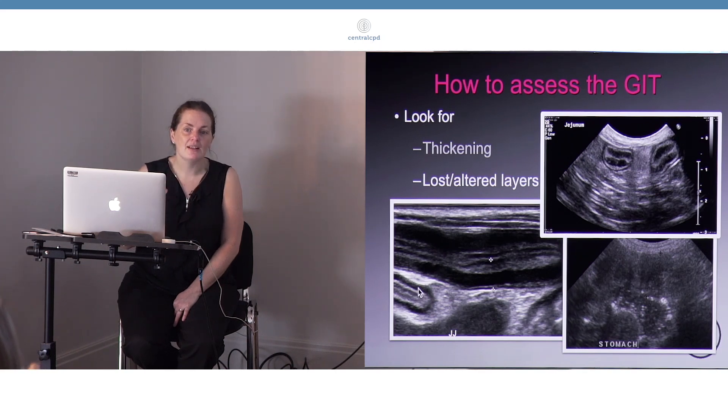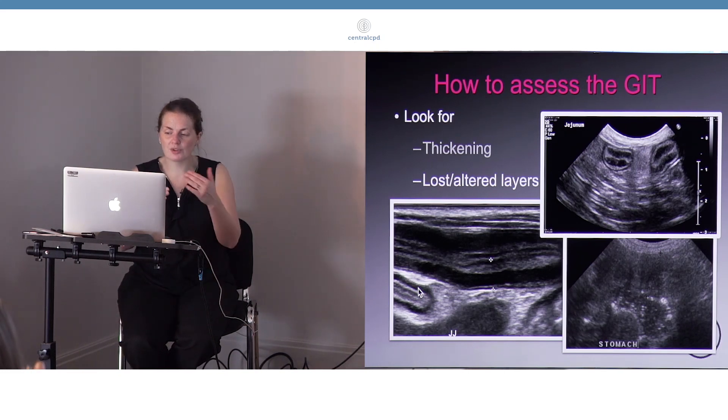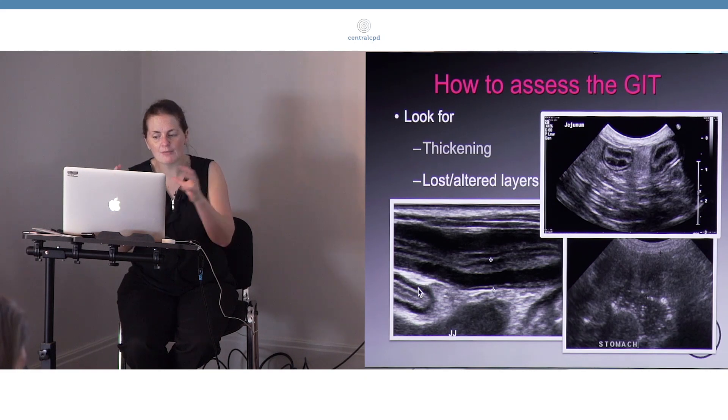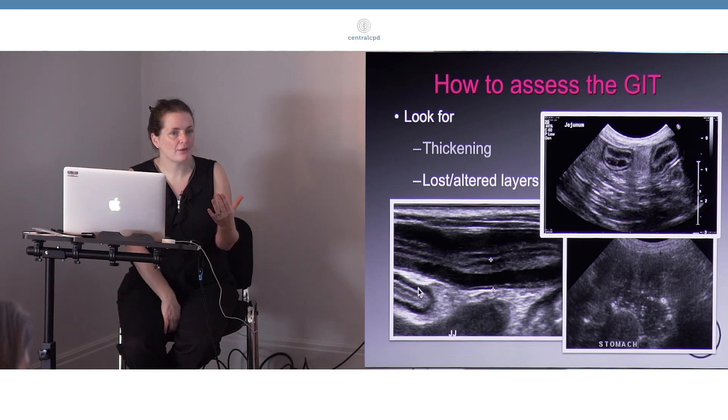That can be associated with a variety of different things. Altering the proportions of the layer, particularly with muscularis thickening, can be seen particularly in cats associated with inflammatory bowel disease.